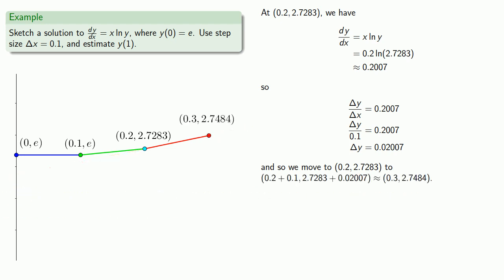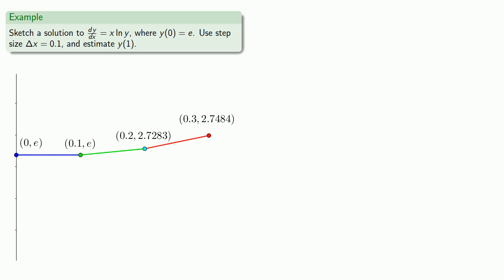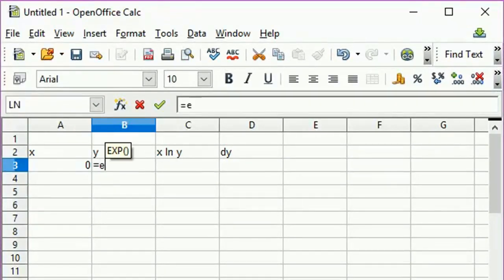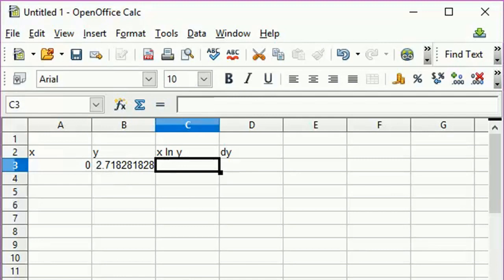Now you could do this by hand, but I wouldn't. You could program a computer to do all these steps automatically. But I'm a little lazy, so what I did is I did this in a spreadsheet format. So we have our initial values, x equals 0, y equals e. Our derivative is x log of y.